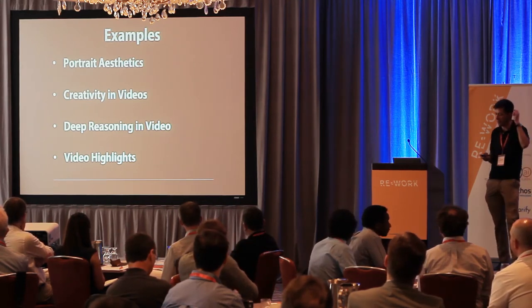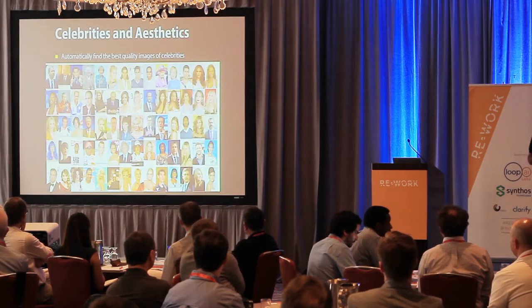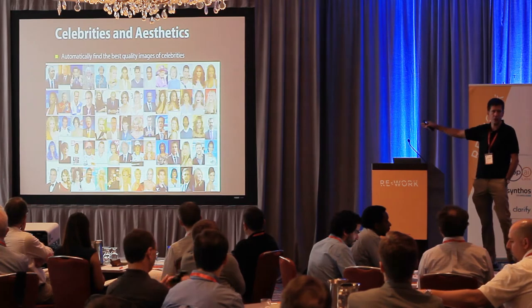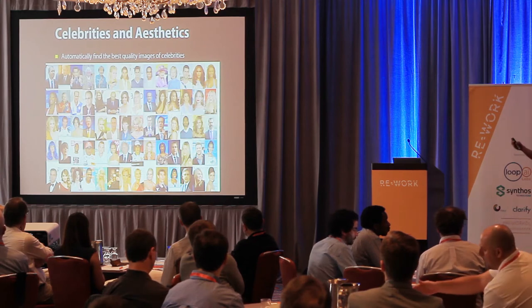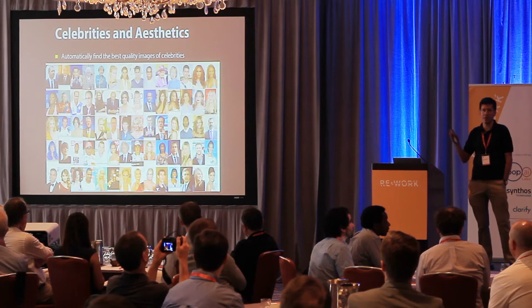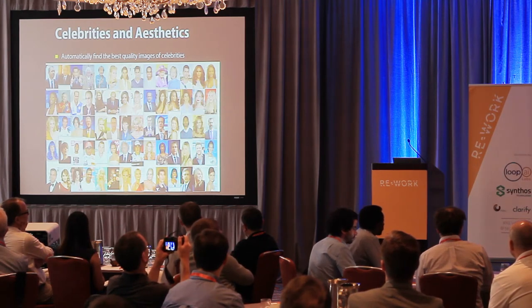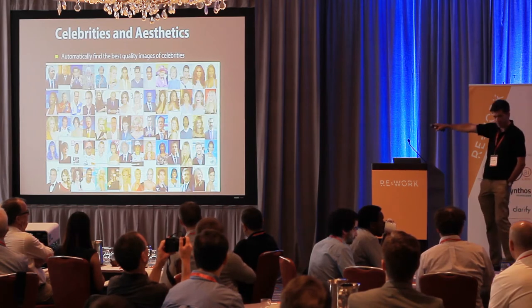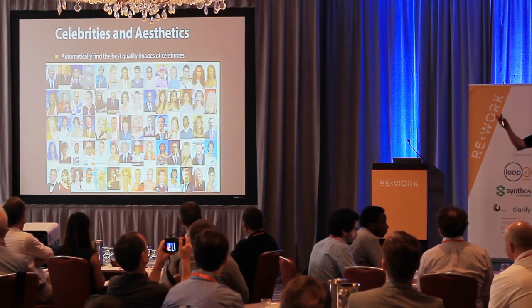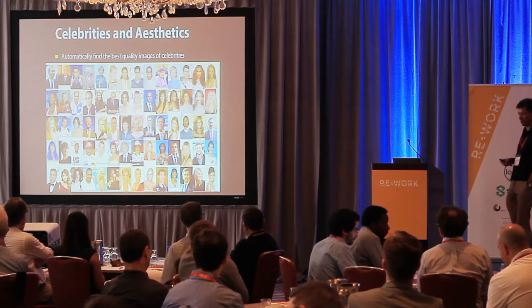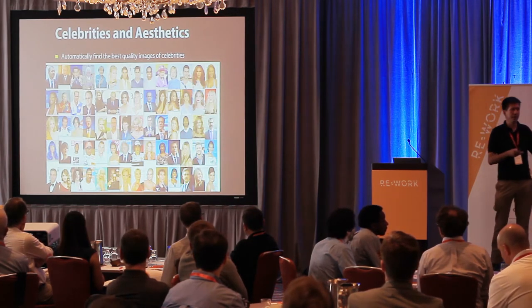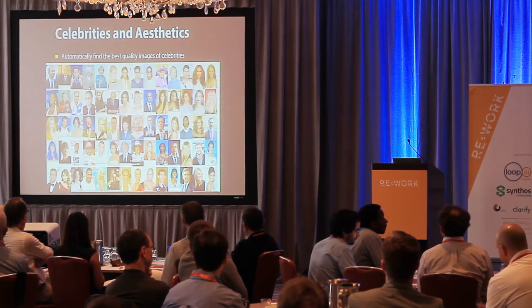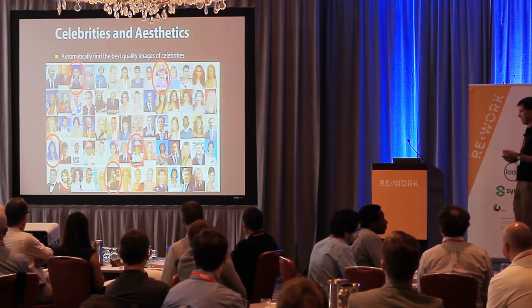I'm going to talk about portrait aesthetics, creativity, videos, deep reasoning, and video highlights. For portrait aesthetics, the specific problem we're trying to solve — with many applications in search, thumbnail generation, and so on — is to automatically find the best single image for every celebrity in the world. This is tens of thousands of people. If you start thinking of celebrities in India and countries in Africa, it becomes a hard problem.